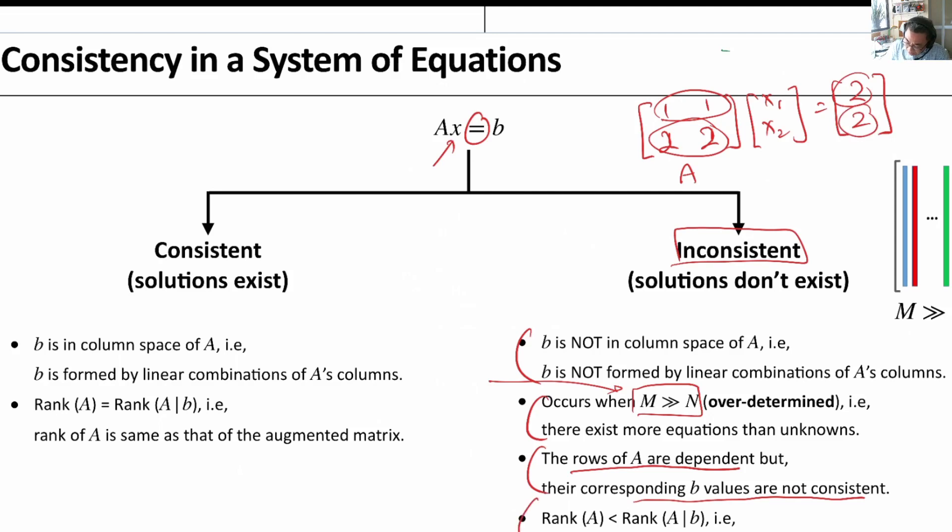And the last interpretation is by adding an extra column then the rank of this augmented matrix has increased by 1 as compared to rank of A. It means that B is not in the column space of A. So this interpretation is actually the same as the first line.